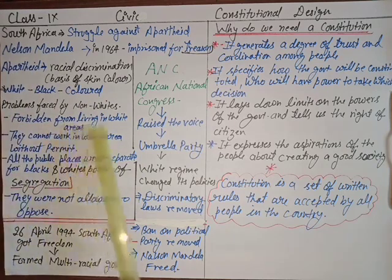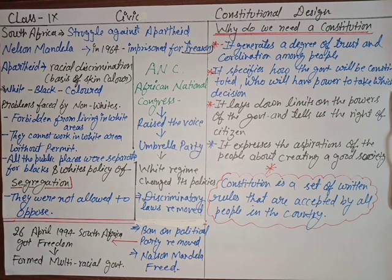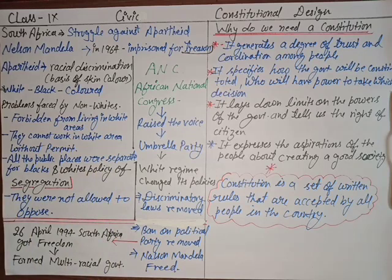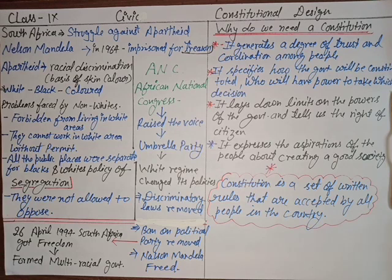Black and colored people could not work in white areas without a permit. All public places were separate for blacks — parks, libraries, public toilets — everything was segregated. White people had their own spaces and black people had separate ones.